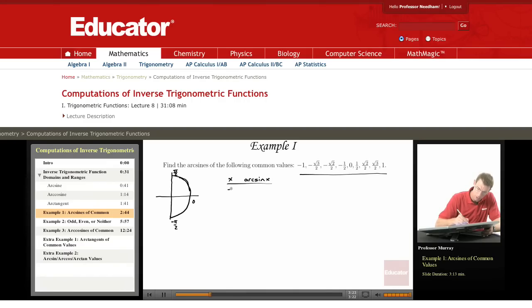So we've got negative 1, negative √3 over 2, negative √2 over 2, negative 1/2, 0, 1/2, √2 over 2, √3 over 2, and 1.